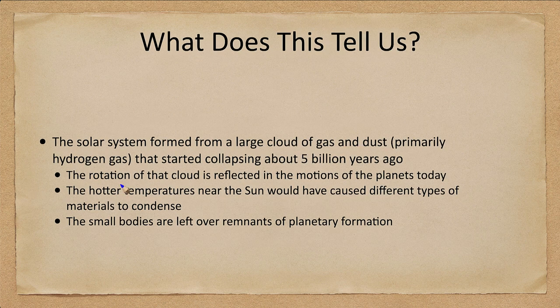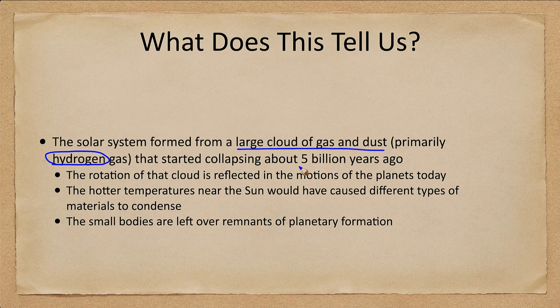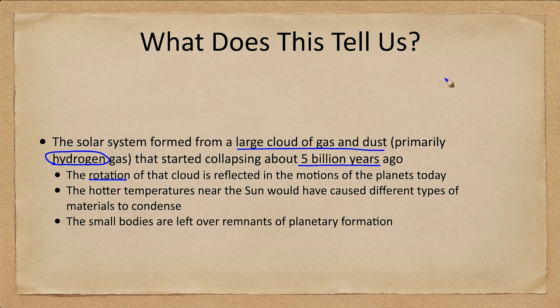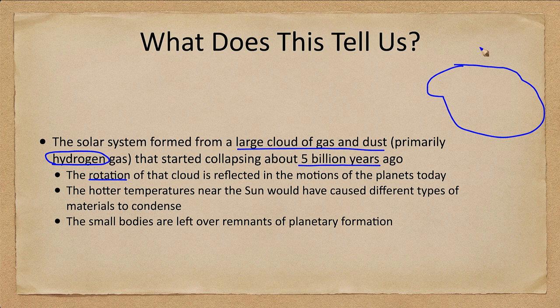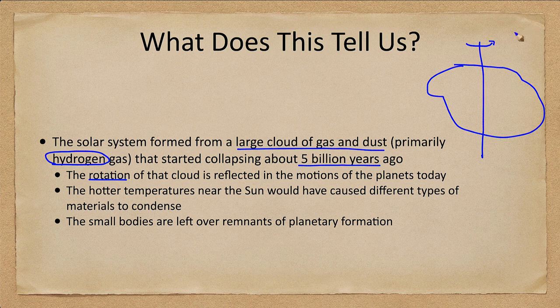What does this tell us? We believe that the solar system formed from a large cloud of gas and dust, mostly hydrogen just like everything else in the universe, that started collapsing about 5 billion years ago. The rotation of that cloud, you had a big blob of a cloud here rotating and it had some slight rotation, very slow, could have taken millions or billions of years to rotate once on its axis, but that slight rotation is reflected in the motions of the planets today.